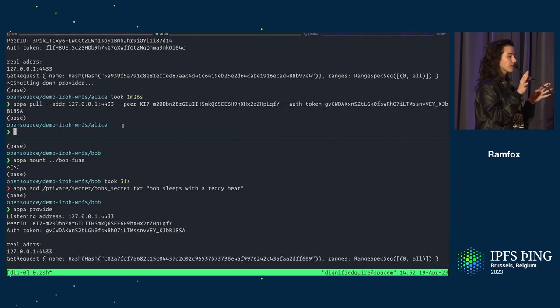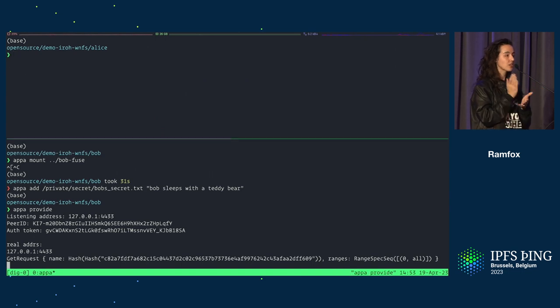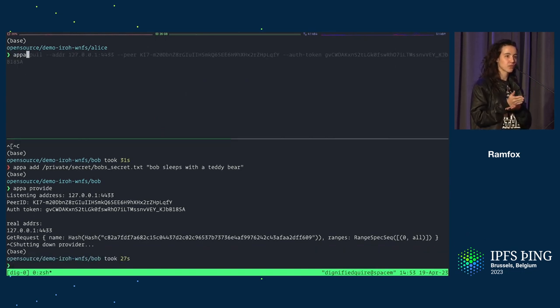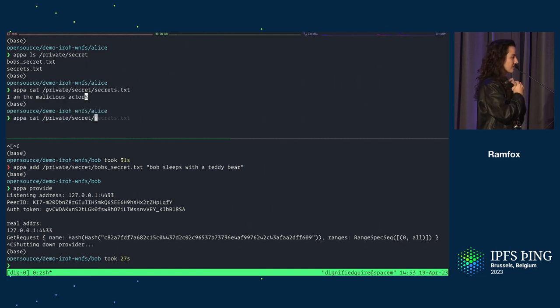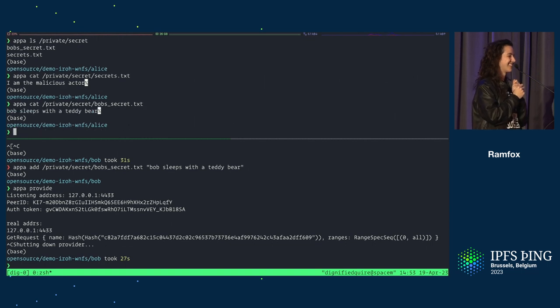Great. Now, the secret sauce there is we actually only did an incremental transfer. We didn't transfer the whole system. We reconciled what was different and just sent the diff. And now let's make sure that Alice was able to read Bob's secret. And now she knows.